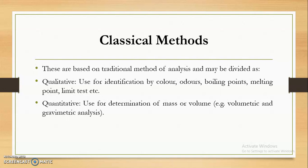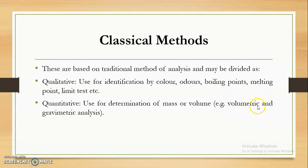In qualitative classical methods, they are used for the identification of color, odor, boiling point, melting point, and limitation. These are the various qualitative methods based upon the principle of classical methods. In quantitative classical methods, we use determination of mass — that is the weight of the sample — or the volume. That is the volumetric method and the gravimetric analysis. Majorly our syllabus is focusing on volumetric analysis, its types, and gravimetric analysis.